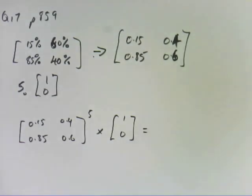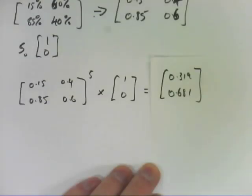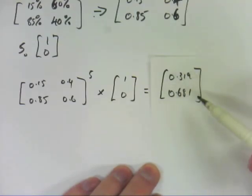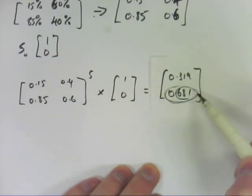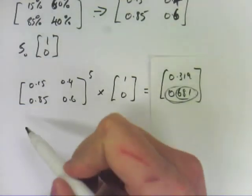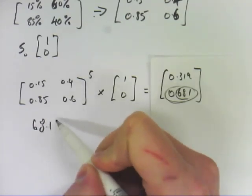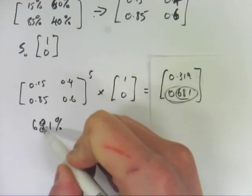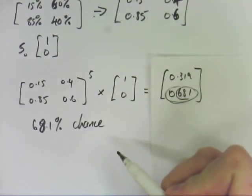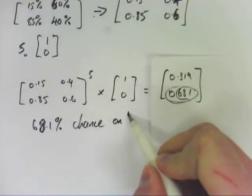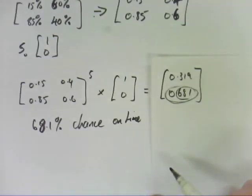So that comes out at, if you do that on your calculator, there's a 0.319 there and a 0.681 there. Now, when you translate that back into a percentage, there's a 68.1, this one here, 68.1% chance of that train being on time that following Friday.